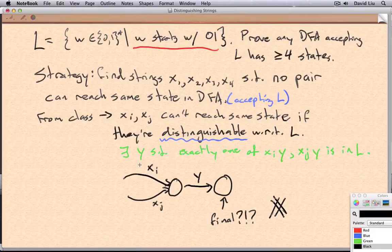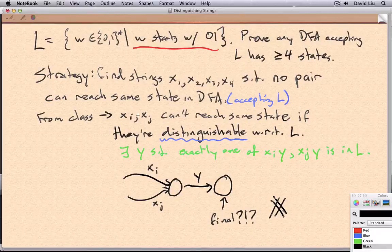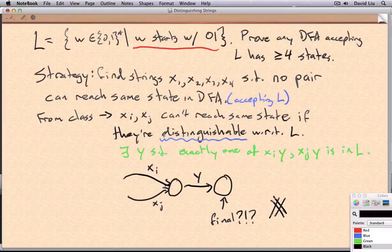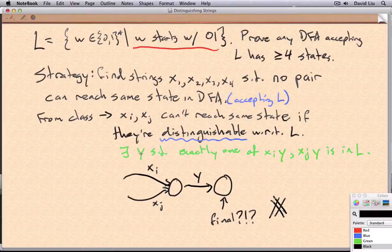Also, notice that this Y, it can be different for different pairs. So once we pick a pair, we just need to show that they're distinguishable, which means that there exists a Y with this property.